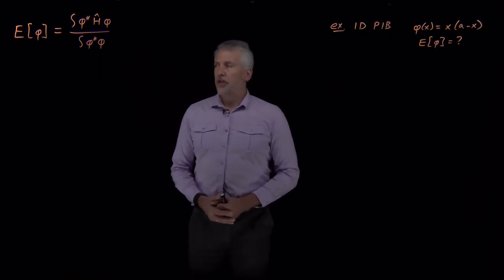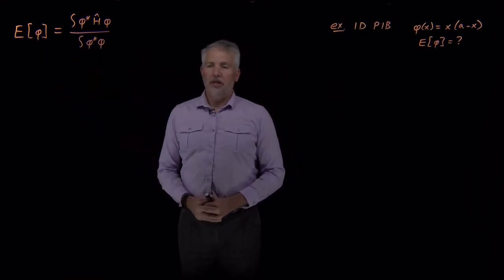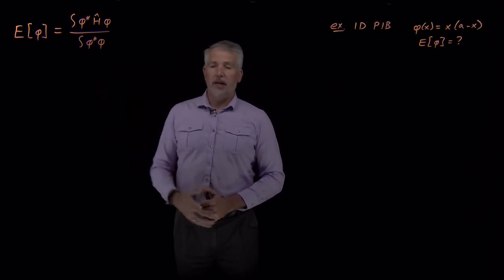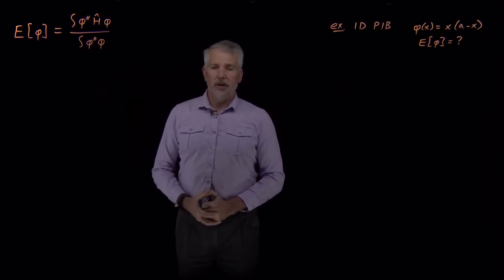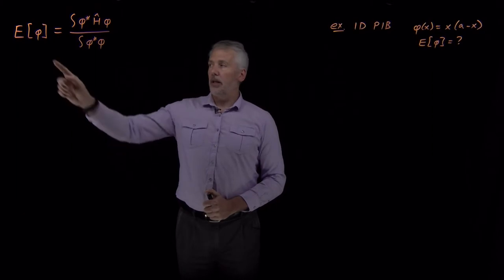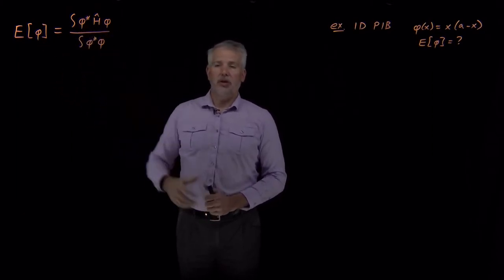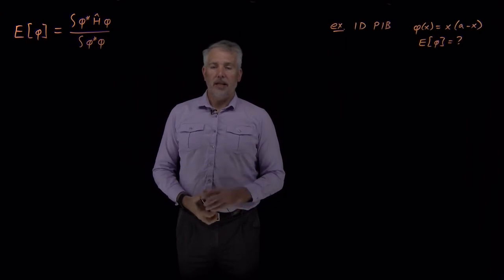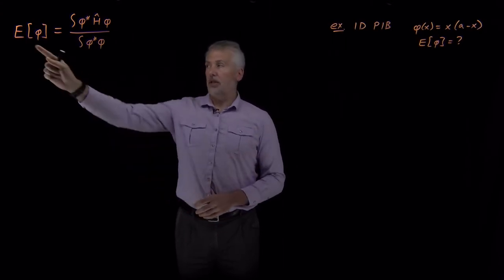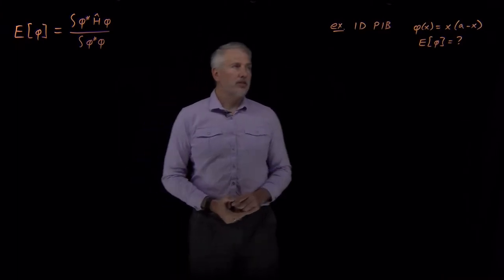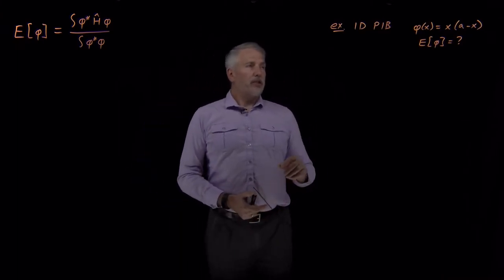We've seen a definition of this quantity called the variational energy, where even if we don't know whether a function phi is or is not a wave function, we can at least tentatively compute the energy of that wave function by doing a set of integrals in the numerator and the denominator. When we happen to have guessed the right wave function, this energy function will tell us the correct energy. To see how that works in practice, let's do a relatively simple case.